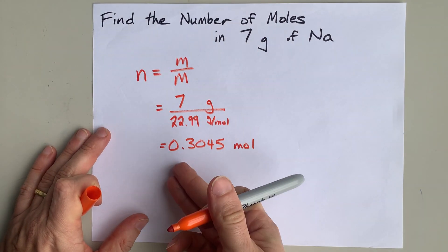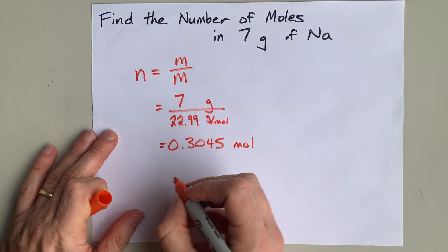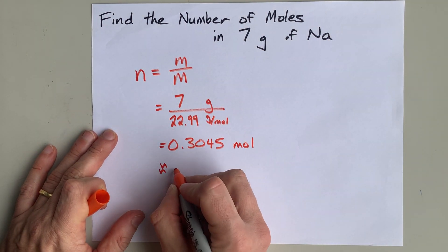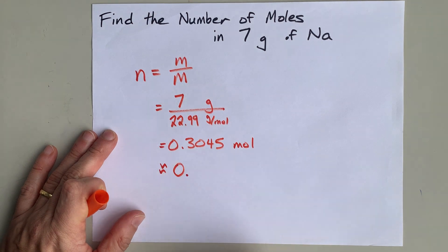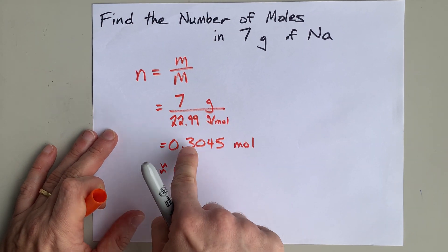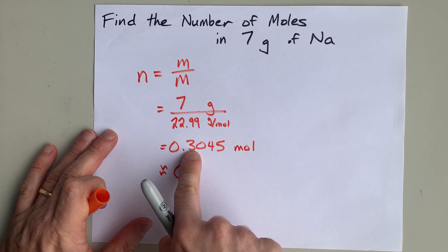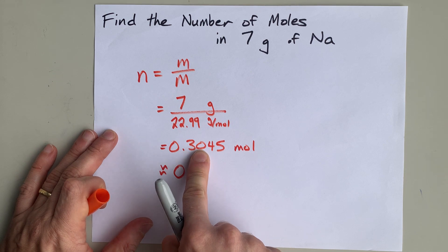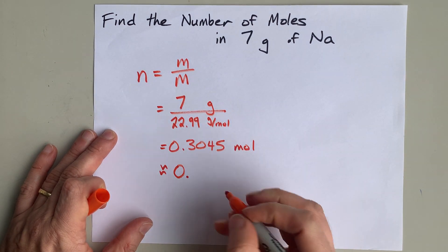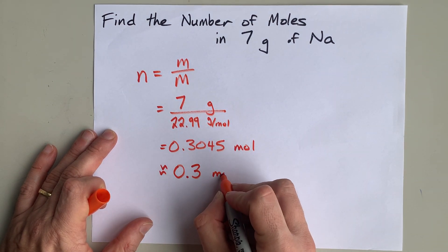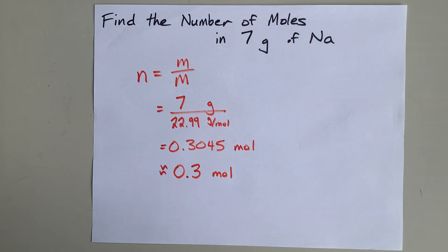Now, by sig figs, I'm only supposed to have one significant digit in my final answer. The leading zero doesn't count, and then the next digit is the significant one. What comes after it is less than 5, therefore it just gets chopped off. So my official answer here is just 0.3 moles.